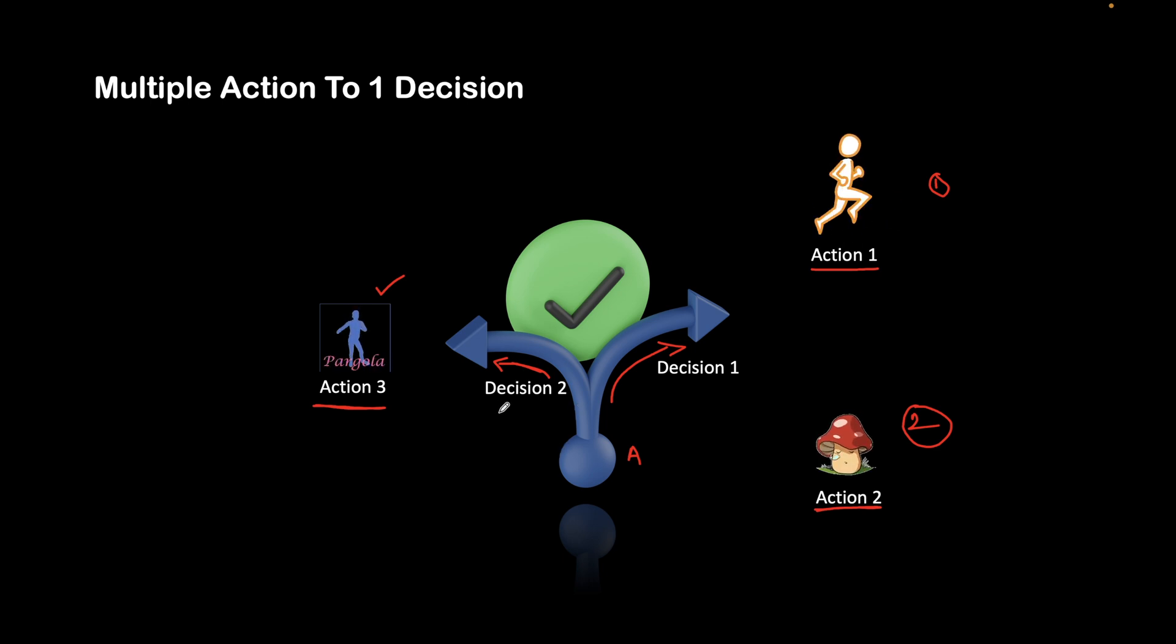We can see that we have two choices. If we are taking choice one, then we need to perform two actions: action one and action two. If we are taking decision two, then we need to perform only one action.